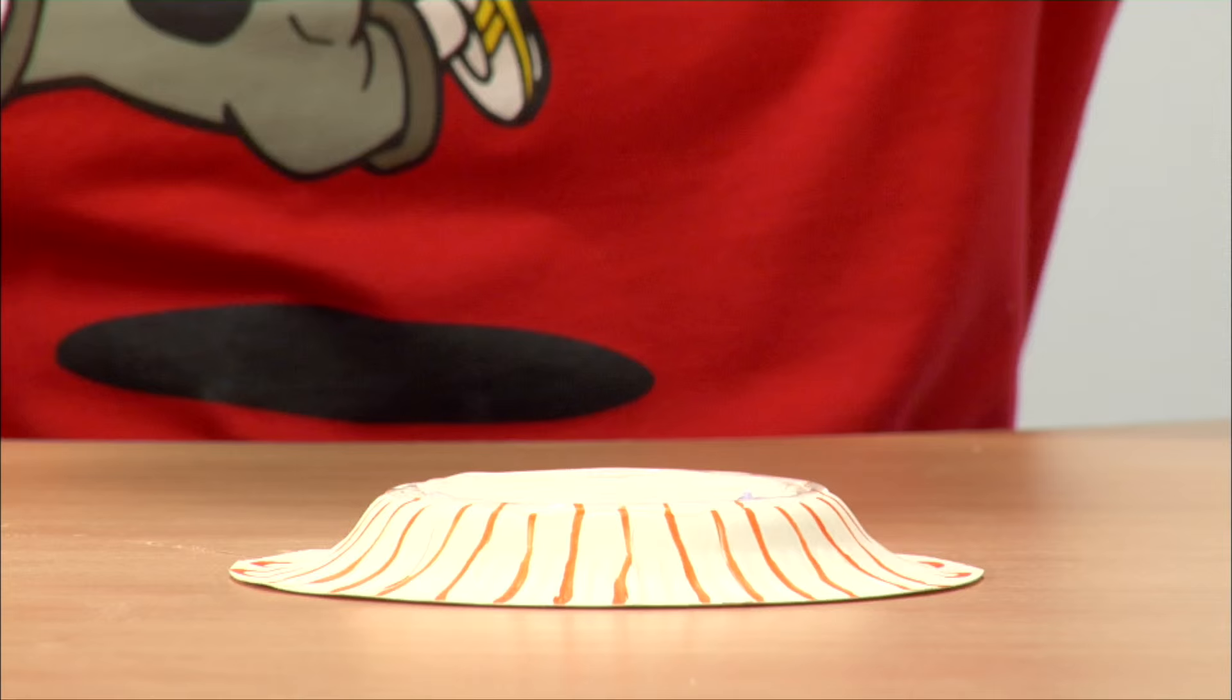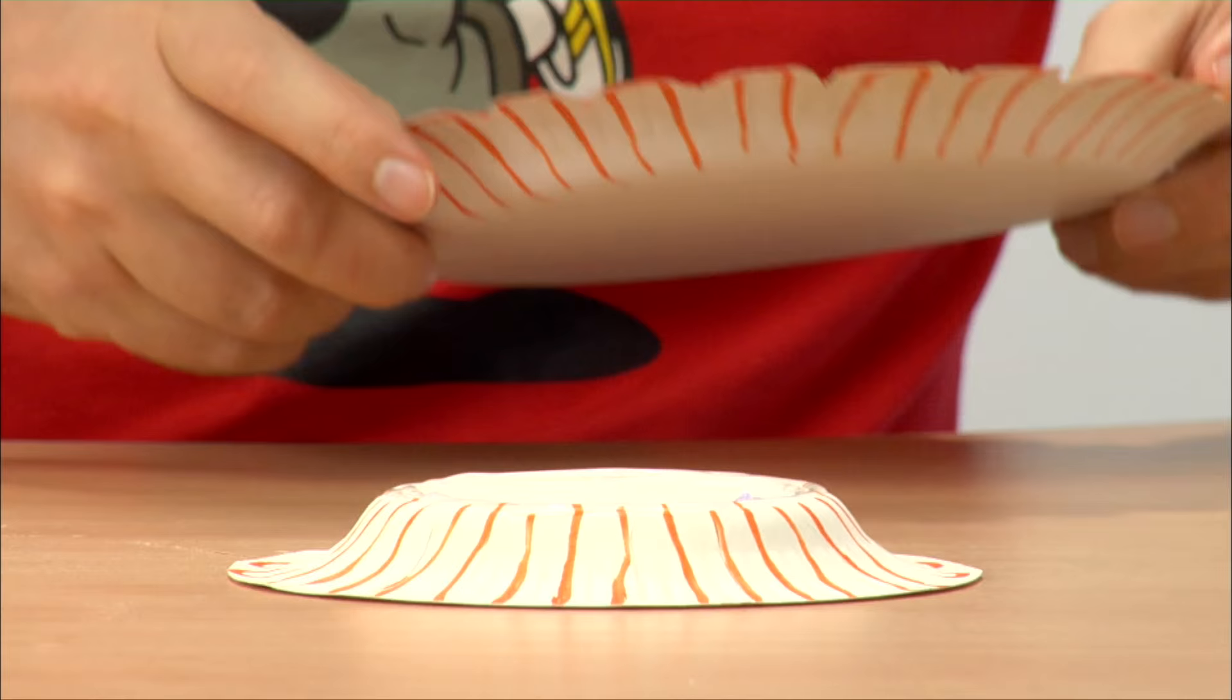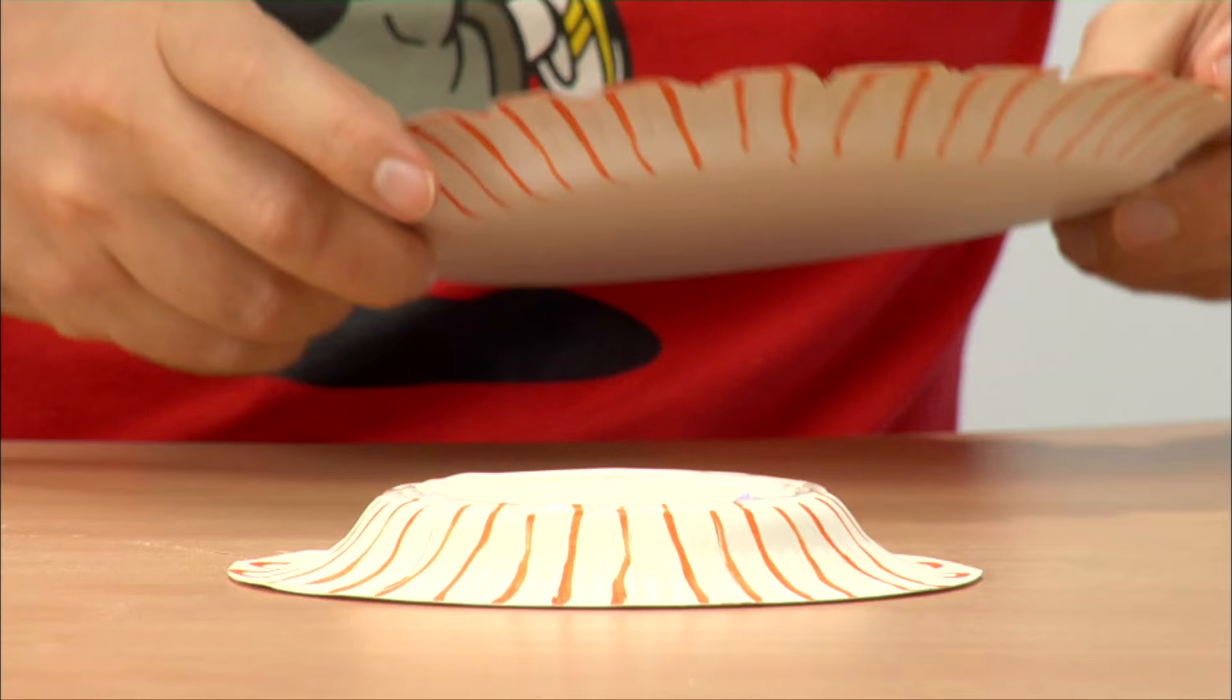Then, I glue the bottom of the big plate to the bottom of the small plate. And there, you have the finished tray.